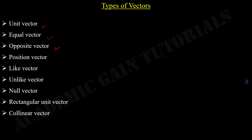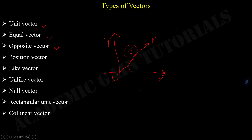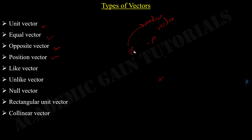Now we will see what is a position vector. We draw a reference frame with an x-axis, y-axis, and origin O, and a point P. If we draw a line from origin O to point P, then this line represents a vector. This is known as a position vector, which is also called a radius vector.